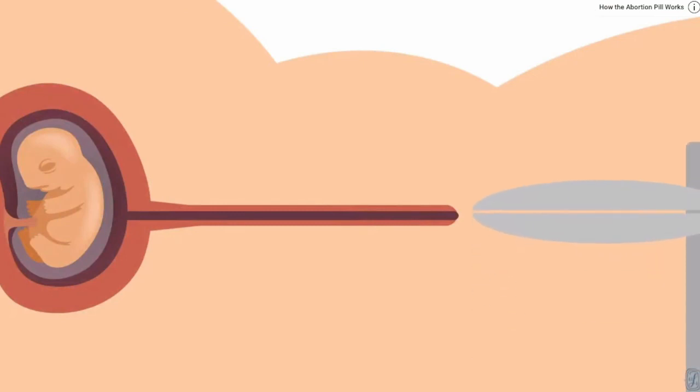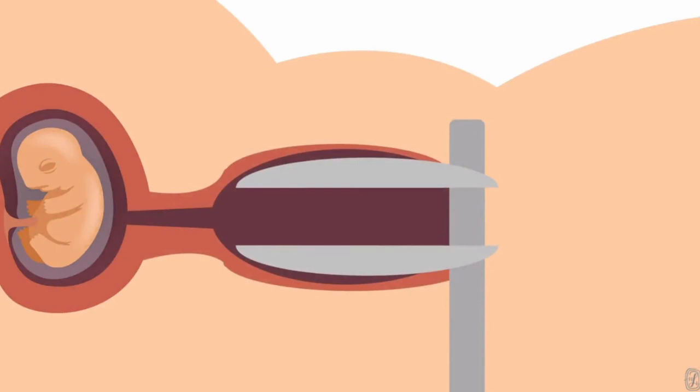The abortionist will insert a tool called a speculum into the woman's vagina to open it. Then he uses tools called dilators, which come in various sizes, to enlarge the cervix. He needs to enlarge the cervix so he can gain access to the baby in the uterus.